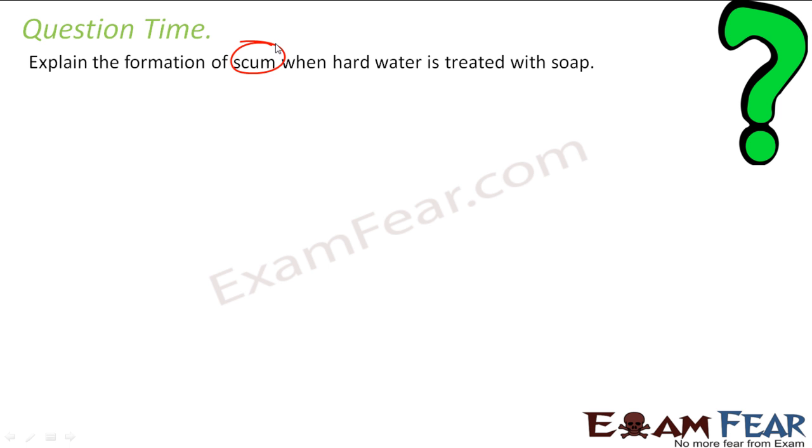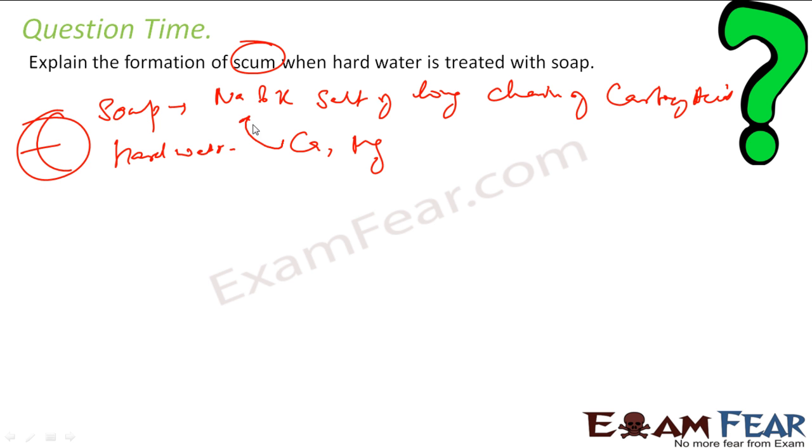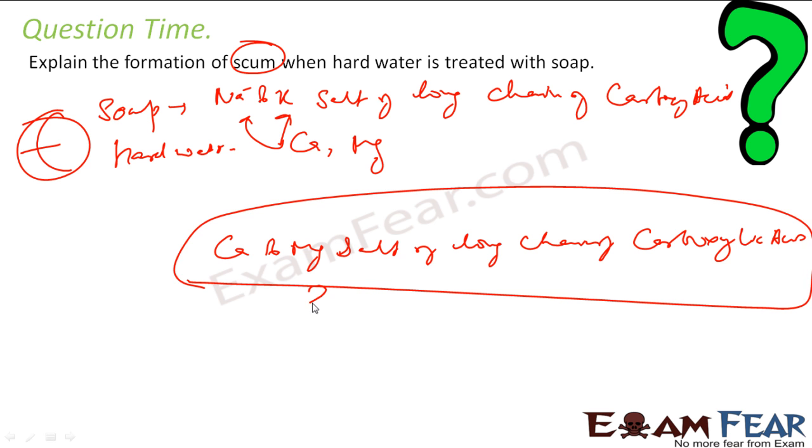Explain the formation of scum when hard water is used. Soap is sodium or potassium salt of long chain of carboxylic acid, fatty acid. Hard water has calcium and magnesium. Now if I use these two, if I add these, this calcium and magnesium may replace potassium and sodium. It may form calcium and magnesium salt of long chain of carboxylic acid. This is called scum. And this is insoluble in water. This is a white precipitate-like thing which makes things more bad. It sticks to the clothes. The logic is, calcium and magnesium may have displaced sodium and potassium and it forms scum.